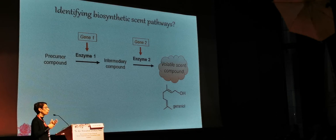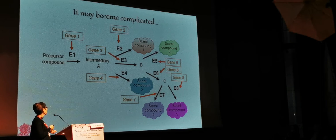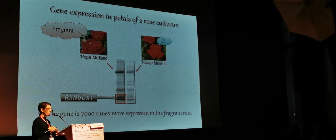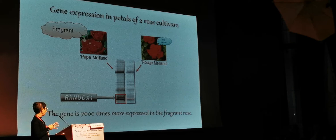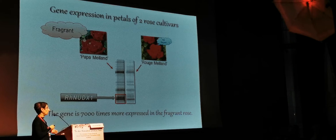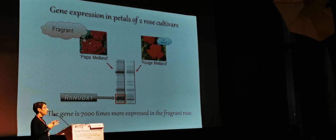This is a very hypothetical scheme, but in the real world it is more complicated because you have many genes, many compounds, and all of them are related. As an example of what we have done so far: we compared two different cultivars — one, Papillon, which is very fragrant, and another, Bouchemelion, which is almost scentless. Using different techniques, we compared the genes expressed and active in the petals of these two roses. We found one gene which is very highly expressed and very active in the scented rose, and not expressed at all in the non-fragrant rose — 7,000 times more expression in the fragrant cultivar.